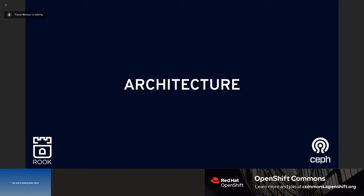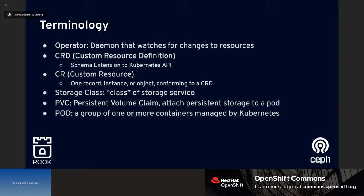When talking about OpenShift and Kubernetes, there's a whole new set of terminology. An operator is a daemon that watches for changes to resources - it's waiting for instructions on what desired state you want in the system, and has the code to make it happen. Just like a human operator making things happen in a data center, the Rook operator automates what's happening in the cluster.